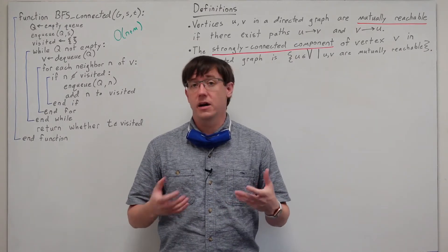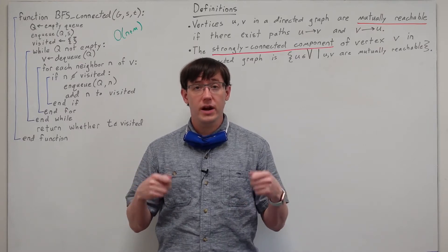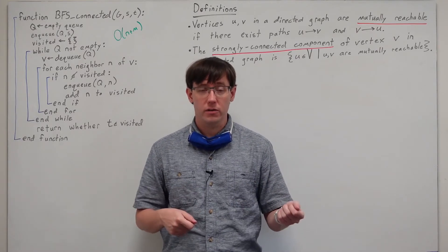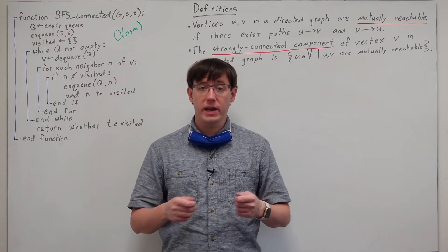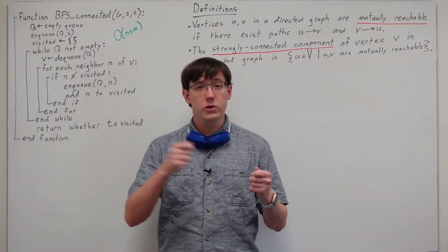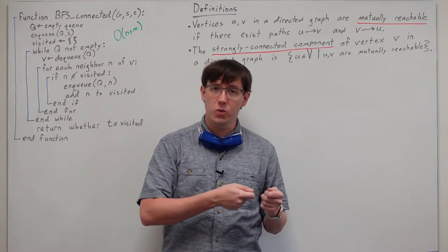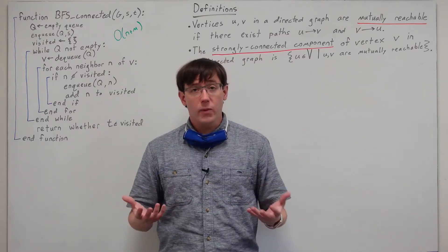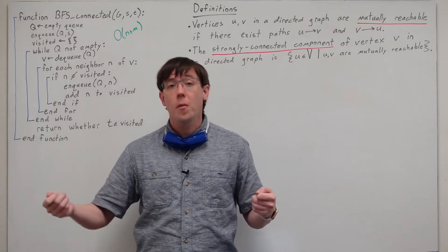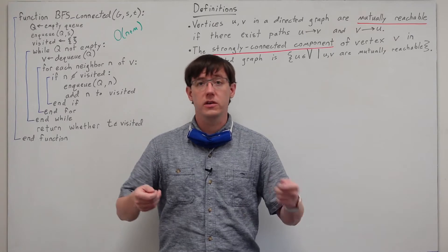The reason is that in an undirected graph, any two vertices that are connected are connected in both directions. But in a directed graph, we can have a path from vertex u to v, but not have a path back from v to u. So in a directed graph, we can say that vertex u is reachable from v if there is a path from v to u.